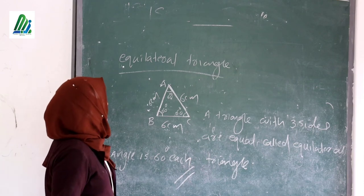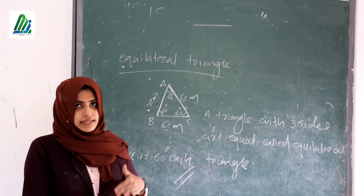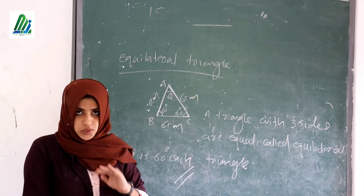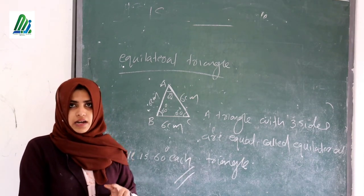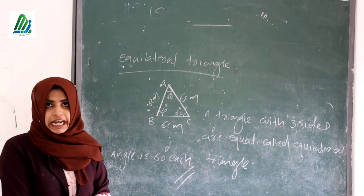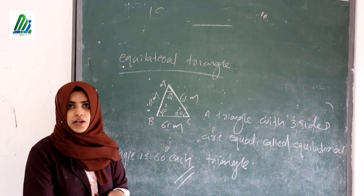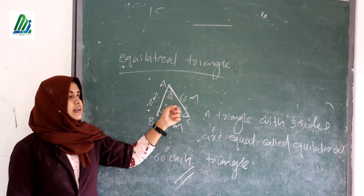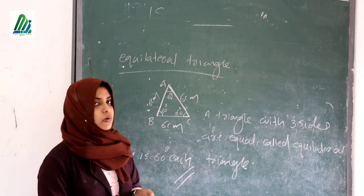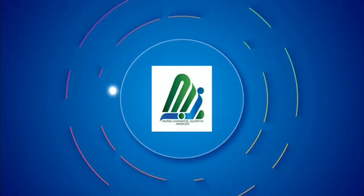To summarize: an isosceles triangle is a triangle with two sides equal, and its angles opposite to the equal sides are also equal. If two sides are equal or two angles are equal, the triangle is isosceles. An equilateral triangle has all three sides equal, and each angle is 60 degrees. I hope all of you understand. Thank you.